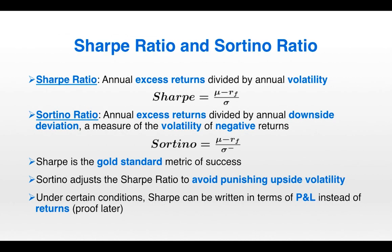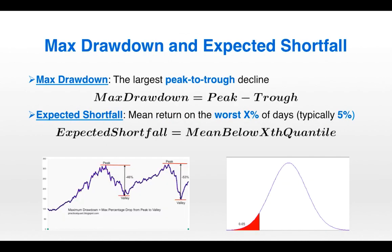We will be referring to the Sharpe many times throughout this series, and later we're going to do a proof of how under certain conditions Sharpe can be written in terms of P and L rather than returns — that will be at the end of this video. Two metrics that express risk in terms of the worst-case scenario loss are the max drawdown and the expected shortfall. The max drawdown measures the largest peak-to-trough decline — if you entered on the worst possible day and exited on the worst possible day, this is how much you would have lost. The problem with max drawdown is it can be distorted by outliers. The expected shortfall addresses this: it is the mean return on the worst 5% of days, looking at the 5% of worst returns and taking the mean.